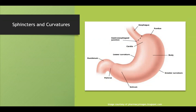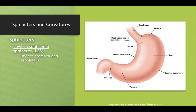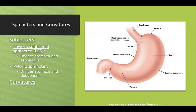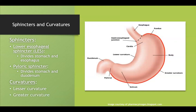Talking about sphincters and curvatures: the lower esophageal sphincter divides the stomach and esophagus, while the pyloric sphincter divides the stomach and duodenum. The stomach has two curvatures — the lesser curvature and the greater curvature, which is the larger of the two curves running all the way around.